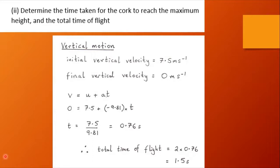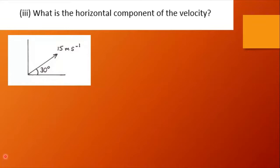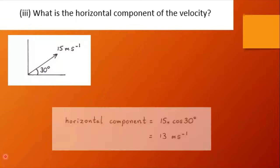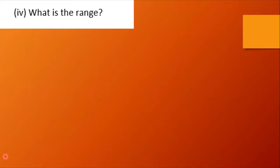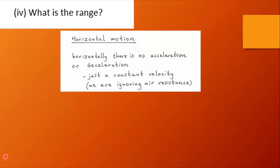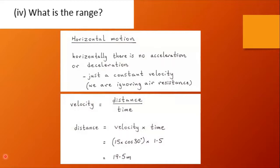Let's double that to find the total time of flight and we get 1.5 seconds. What is the horizontal component of the velocity? Well it's 15 times the cosine of the angle, so that's 15 times cos 30 which is about 13 meters per second. What's the range? The horizontal distance traveled. Let's remember horizontally there's no acceleration or deceleration just a constant velocity. Velocity is distance over time, distance is velocity times time, horizontal component of the velocity times the total time, and that gives us 19.5 meters, let's call it 20 meters.